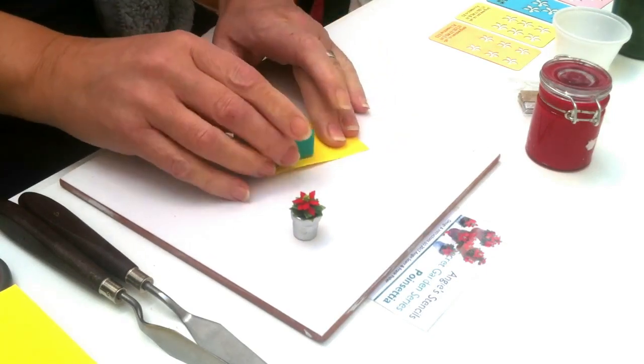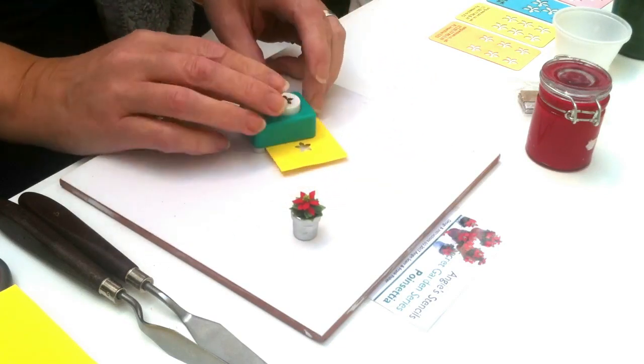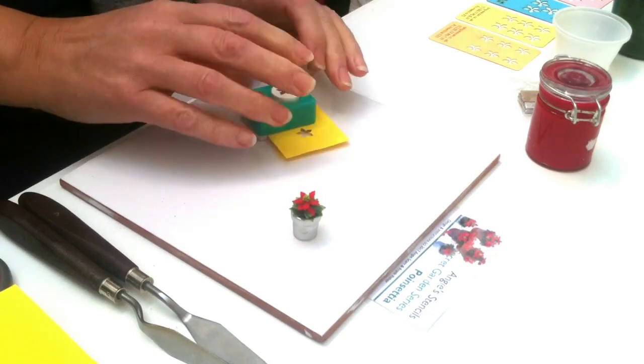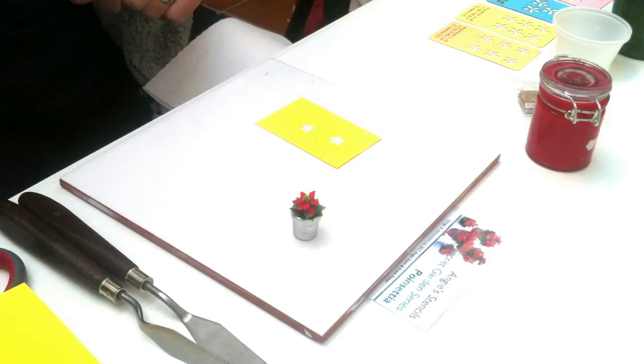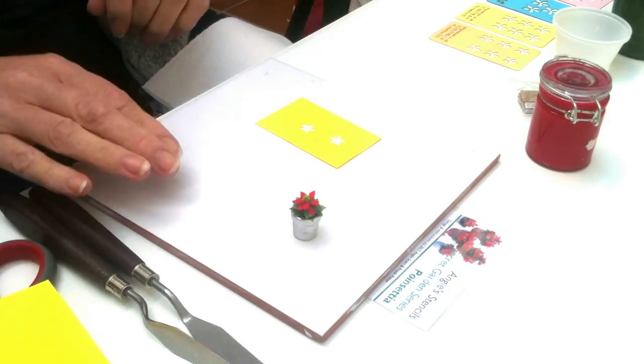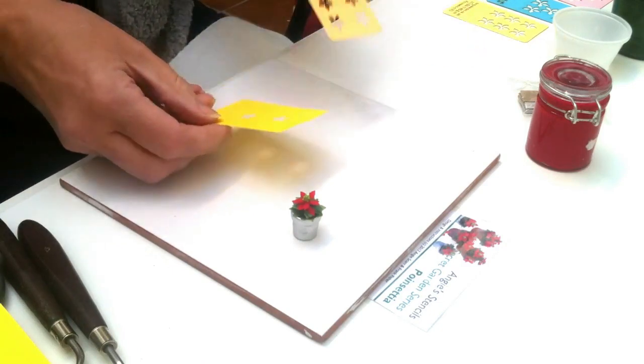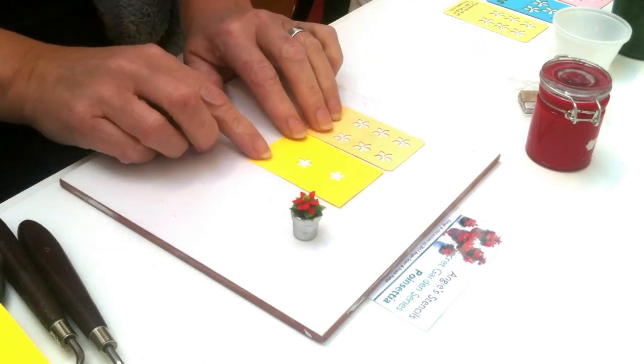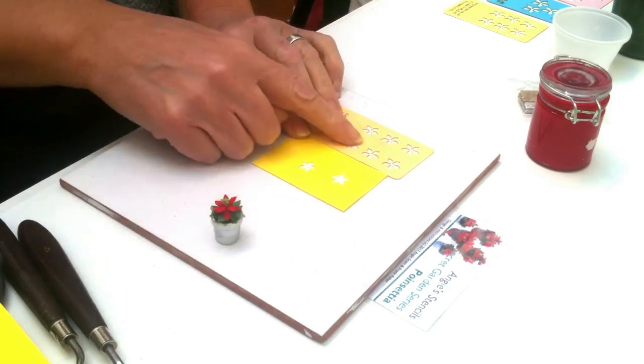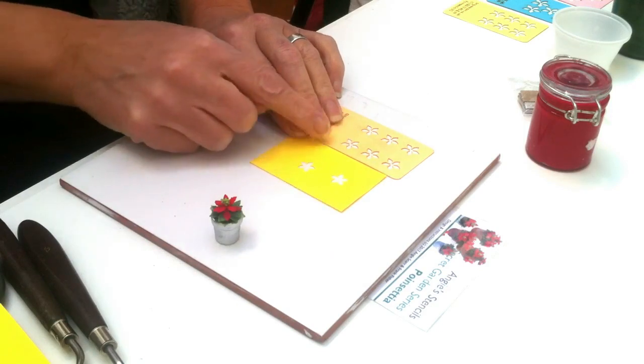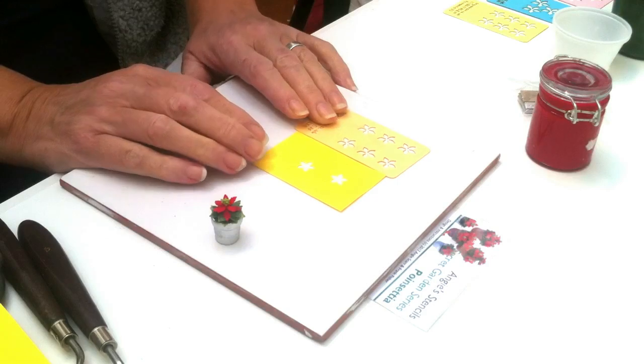All you do is cut out your poinsettia. If you want to, you can cut out more than one so that you can print more than one at a time. I'll show you the difference between the cut out one and the stencils that we sell. You can see that's got a greater indent, although essentially it's the same - it's a five-pointed flower.